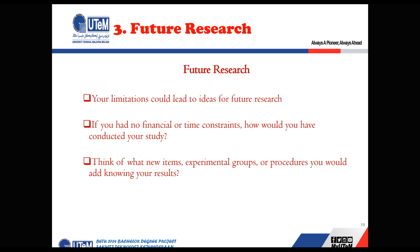Think about what new experimental groups, items, or procedures you would add, knowing your results. If you want to say results can be improved, explain what type of experiments, hardware, or software analysis you want to add so that the results can be much better. You must have theoretical knowledge to support this — if you say adding certain hardware will improve the results, the examiner will ask how, so you should have a clear understanding of how that hardware can improve your results.